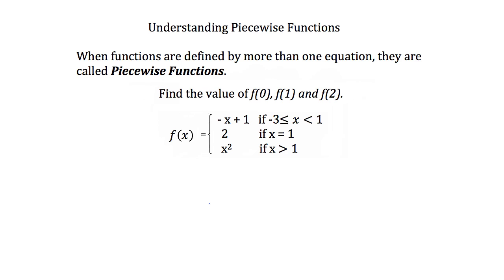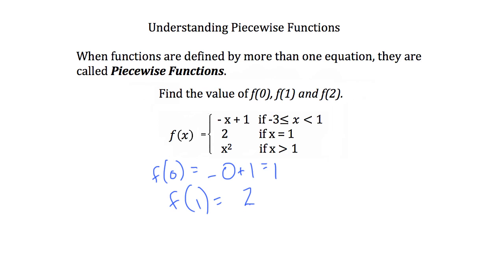This example asks us to find the value of f(0), f(1), and f(2). To find f(0), we observe that when x equals 0, the equation is f equals negative x plus 1. So we have f(0) equals negative 0 plus 1, which equals 1. To find f(1), you'll notice the equation gives f equals 2, so f(1) equals 2. And finally, when x equals 2, the equation is x squared, so f(2) equals 2 squared, or 4.